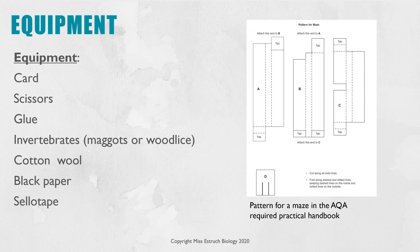You need to create the maze — this image is taken straight from AQA's Required Practical Handbook, which you can find on their website and which gives you a pattern to cut out. You'll therefore need scissors and glue to create the maze, the invertebrates you're going to use, cotton wool to clean the maze between each trial, and black paper and sellotape to make one side dark.